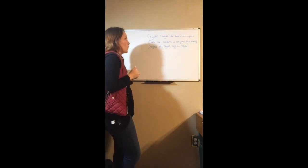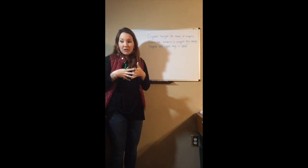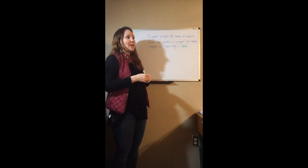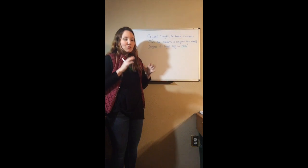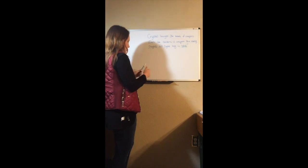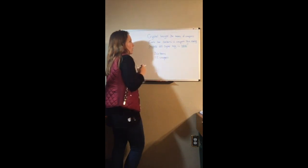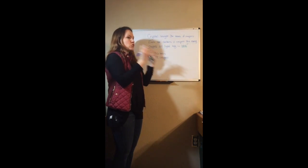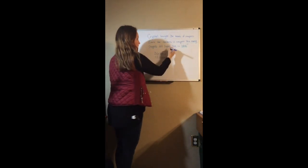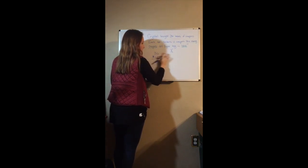There are 12 crayons per box. Whenever I hear the word 'per,' or I can insert 'per' into something, it usually means multiplication. So if you're saying 12 crayons per box, we're going to be doing some sort of multiplication or division. We have 36 boxes of crayons and each box has 12 crayons. If we want to find out how many total, that's 36 groups of 12 — this is going to be multiplication. So I'm going to multiply 36 times 12.